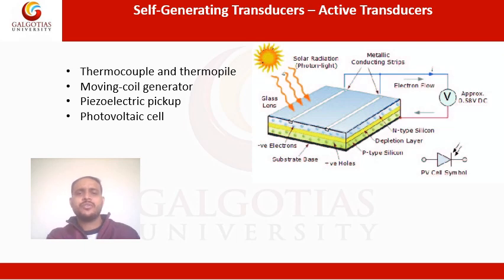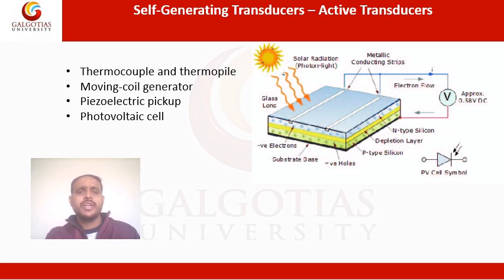The photovoltaic cell generates a voltage in a semiconductor junction device when radiation energy stimulates the cell — used in light meters and solar cells. These constitute the primary and secondary transducers also referred to as active transducers.